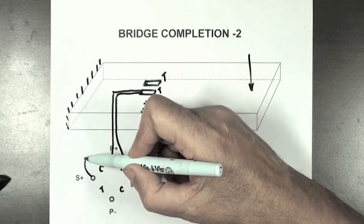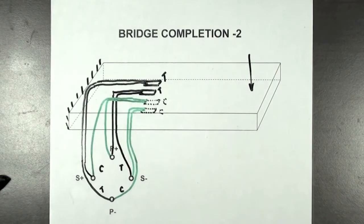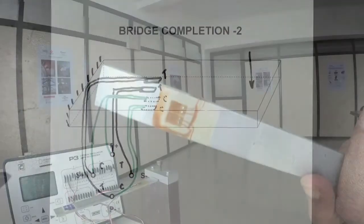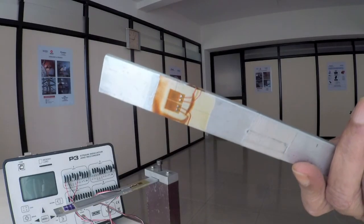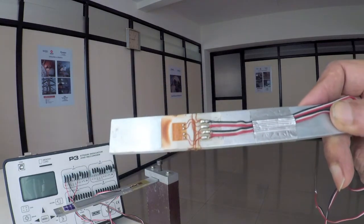The connections are shown in this sketch. A typical full bridge connection using four strain gauges on a beam is seen here.